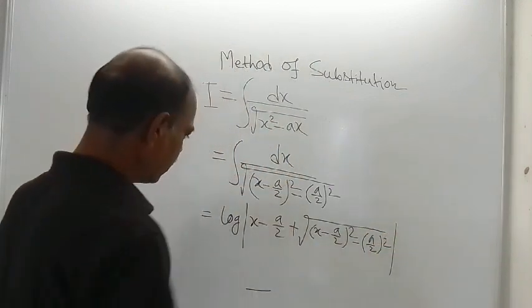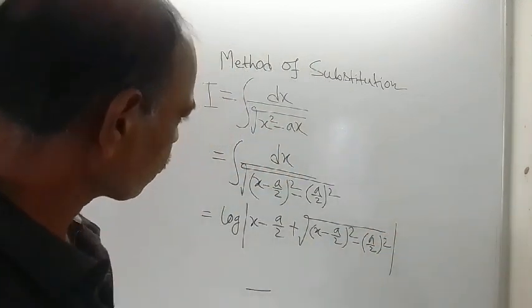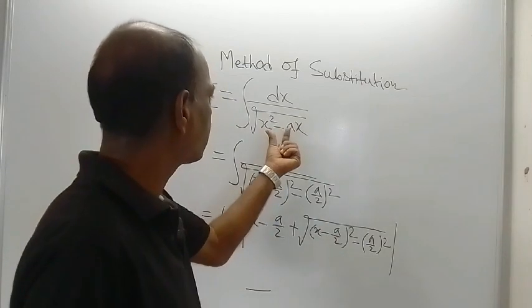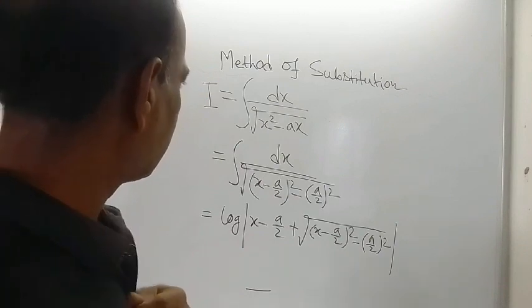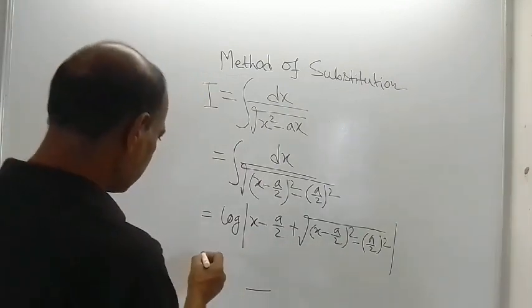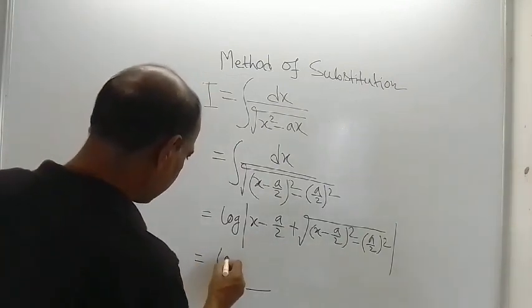This is root sign. So this is equal to nothing but this one: x square minus ax. And so this can be written as, in the next line, log,